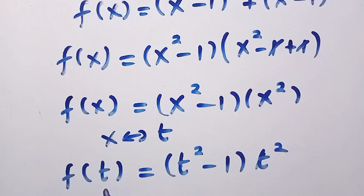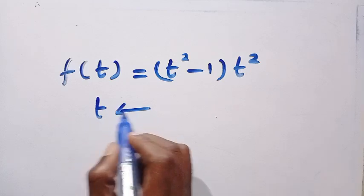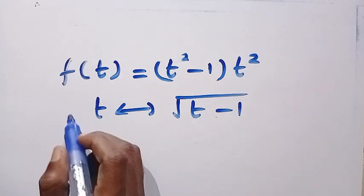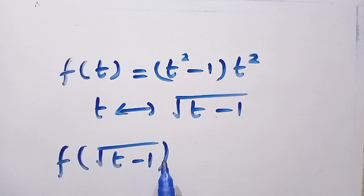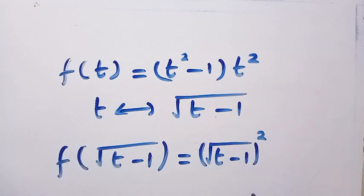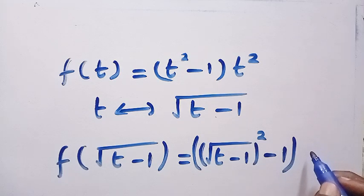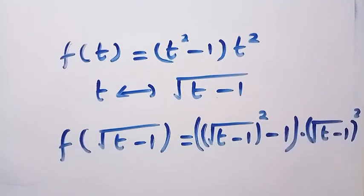We need to know what is f of the square root of t minus 1. If this is what we have for f of t, then let's replace t with the square root of t minus 1. Both are members of the real numbers. We will have f of square root of t minus 1 equals: the first t squared becomes square root of t minus 1 all raised to the power of 2, then minus 1, all in brackets, multiplied by the second t squared, which is also square root of t minus 1 all raised to the power of 2.